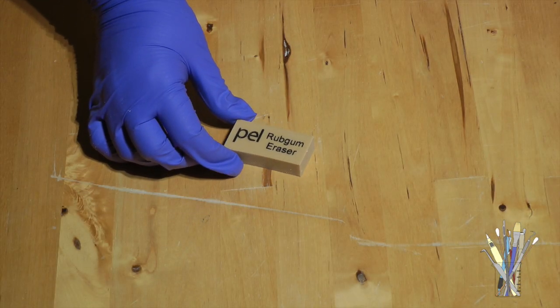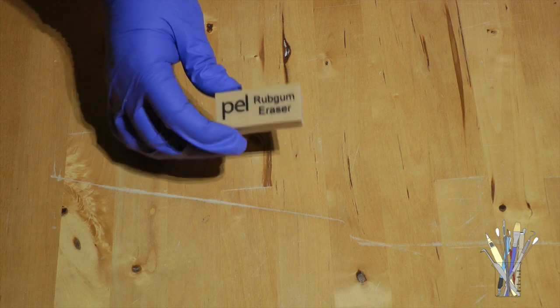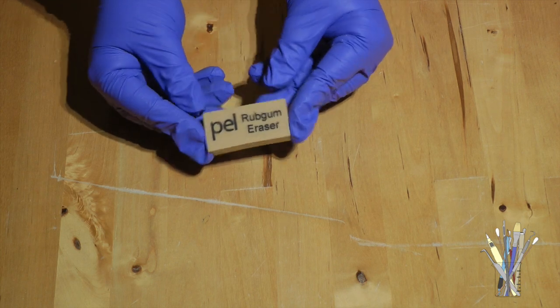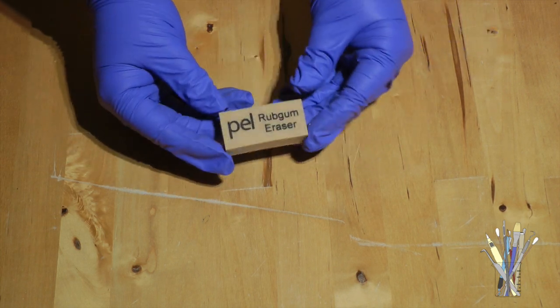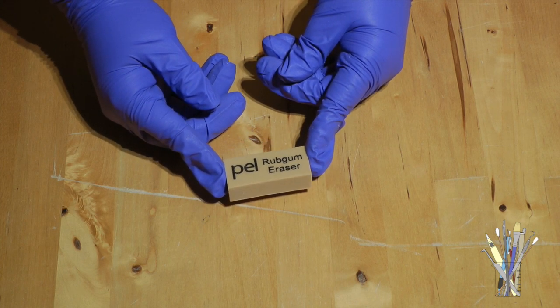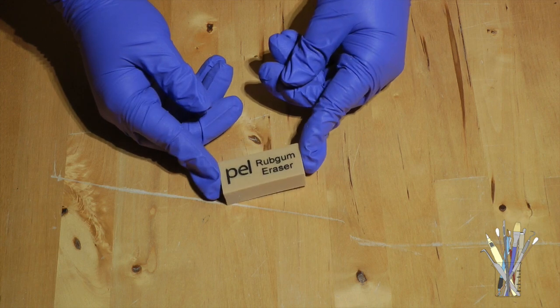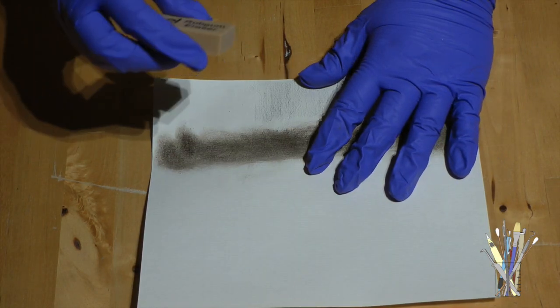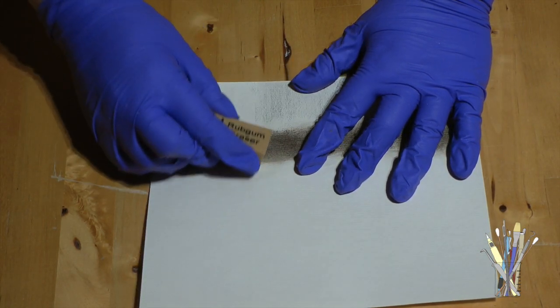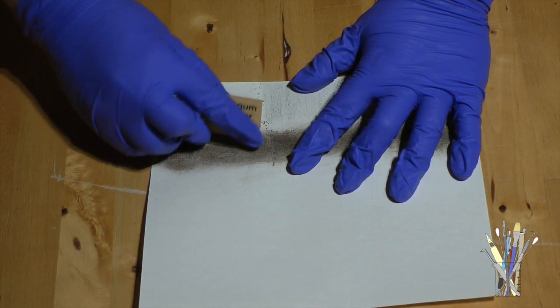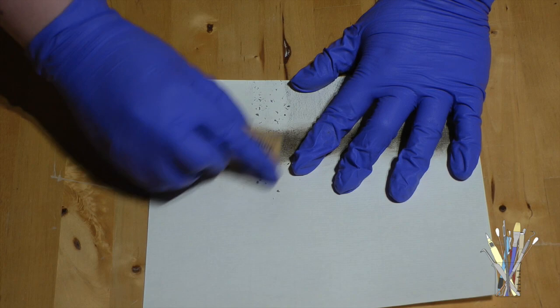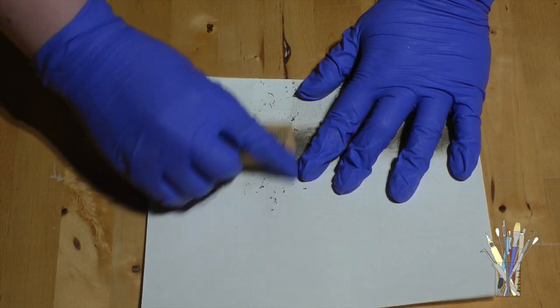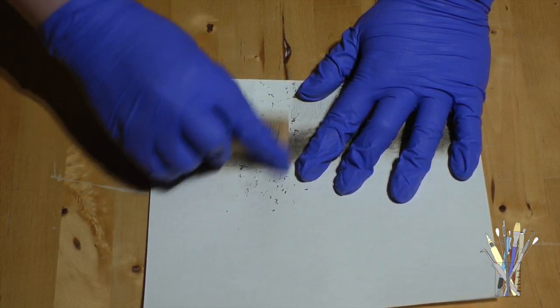Next up is the rub gum eraser. Now this dainty little thing doubles as a non-abrasive eraser and a dry cleaning bar. This comes in huge packs of 12. I mean, I say huge, you're probably going to need them, right? But they come in packs of 12 and they're only 3.95, so very, very economical. Now I'm going to take out my test paper again and see if this does the trick, basically.